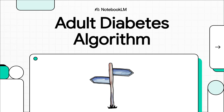Welcome to another medical update from DrPPT.in. Today we are diving deep into the new ADA-EASD consensus guidelines, specifically their algorithm for telling type 1 from type 2 diabetes in adults. We all know this can be a real clinical challenge, so having a clear, structured pathway is a game-changer.